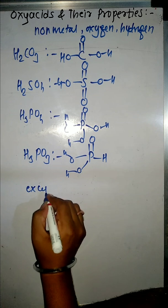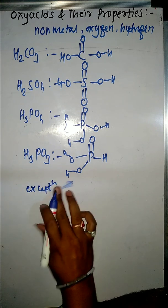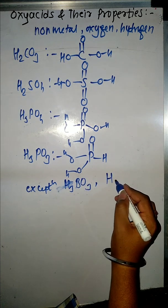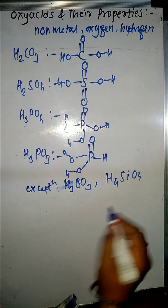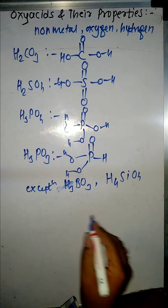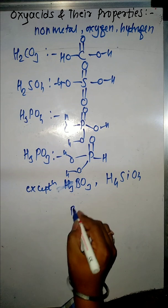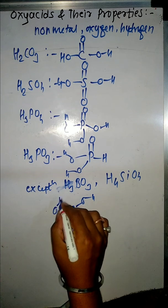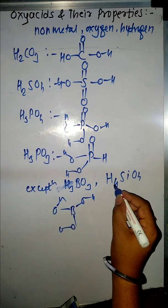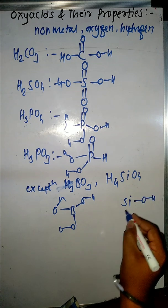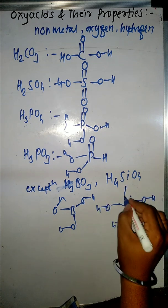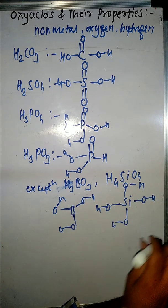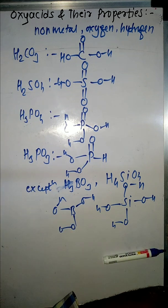So in oxy acids, remember there is always a double bond O present. However, we have exceptions to this rule. The exceptions are H3BO3, which is called orthoboric acid, and H4SiO4, which is called orthosilicic acid. In these cases, there is NO double bond O. For H3BO3, the central atom is boron with 3 hydrogens and 3 oxygens forming 3 OH bonds. Similarly for H4SiO4, the central atom is silicon with 4 hydrogens and 4 oxygens forming 4 OH bonds.